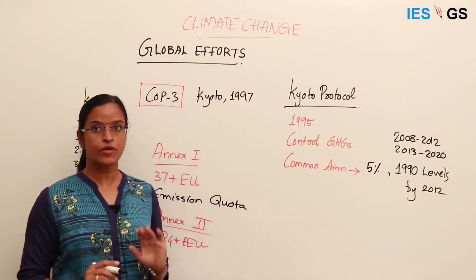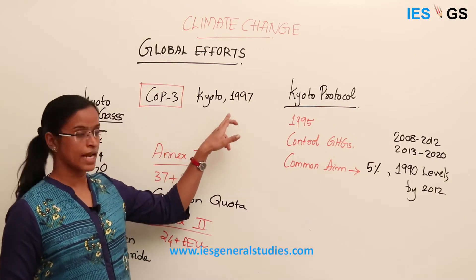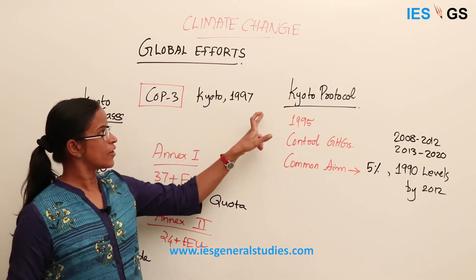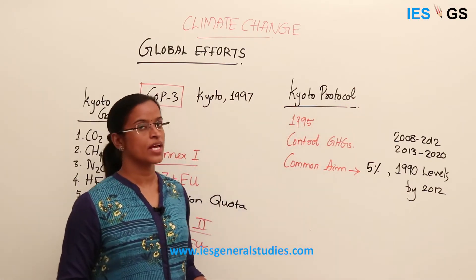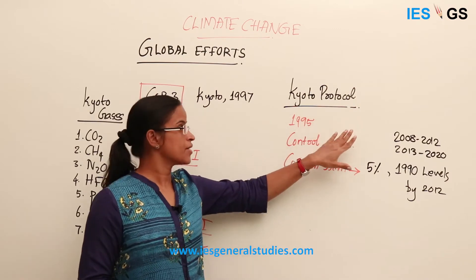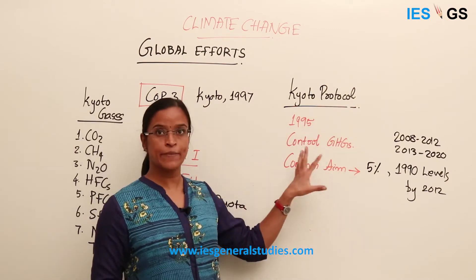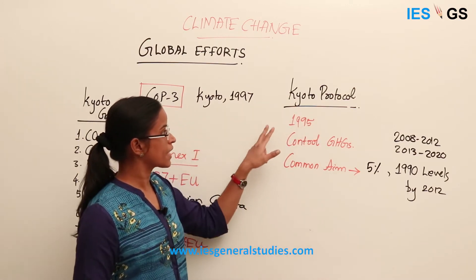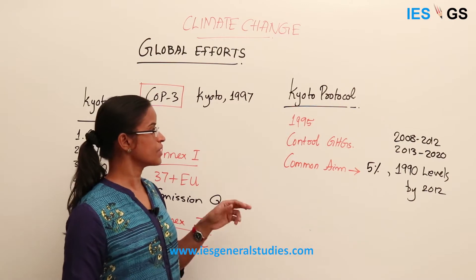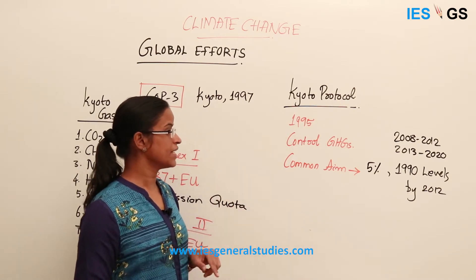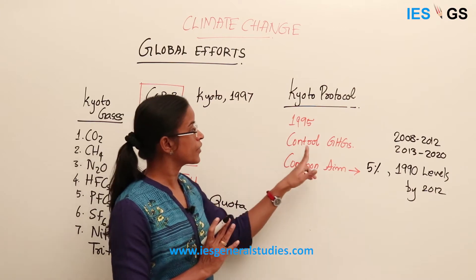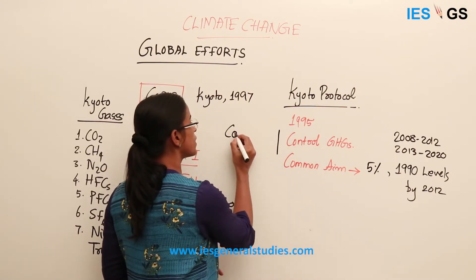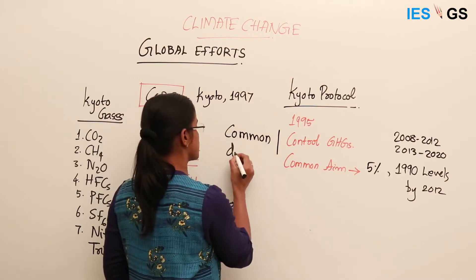The first most important COP happened in 1997 at Kyoto — this is COP 3 — and the major outcome was the Kyoto Protocol. This Kyoto Protocol is very famous because it aims to control the emission of greenhouse gases. The protocol came into force in 1995 when the parties ratified it, and the aim is to control greenhouse gases with a principle of common but differentiated responsibility.